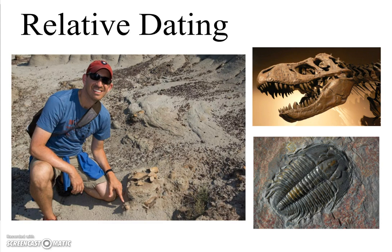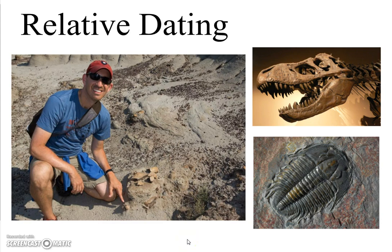Today we're going to look at a process called relative dating. Now, this does not mean that you go out on a date with your cousin — completely icky and nothing to do with science. What relative dating lets us do is look at geologic events or fossils and put them in order from oldest to youngest. For example, is this dinosaur fossil older or younger than the T-Rex skull? And is that older or younger than this trilobite fossil? Relative dating allows us to sequence things in order from oldest to youngest.